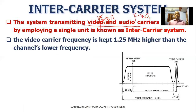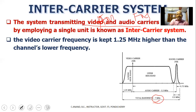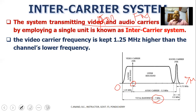Video-AM and audio-FM. The audio carrier frequency is placed higher than the channel's lower frequency. The total bandwidth is 7 MHz. The video carrier frequency is placed 1.25 MHz higher than the channel's lower frequency. The channel's upper frequency is also referenced to set carrier positions.